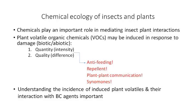We know that insects — many of them are not highly visual creatures. They use smell or olfaction to locate their host, and so chemicals that are emitted by plants and travelling up to them are very important for insects to locate their actual host. But these volatile organic chemicals may be induced in response to damage.